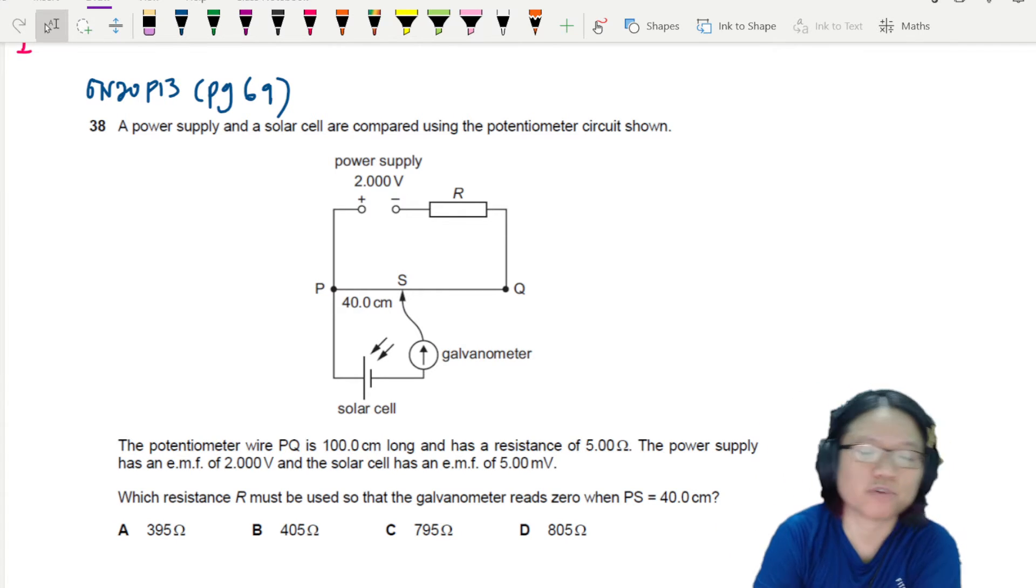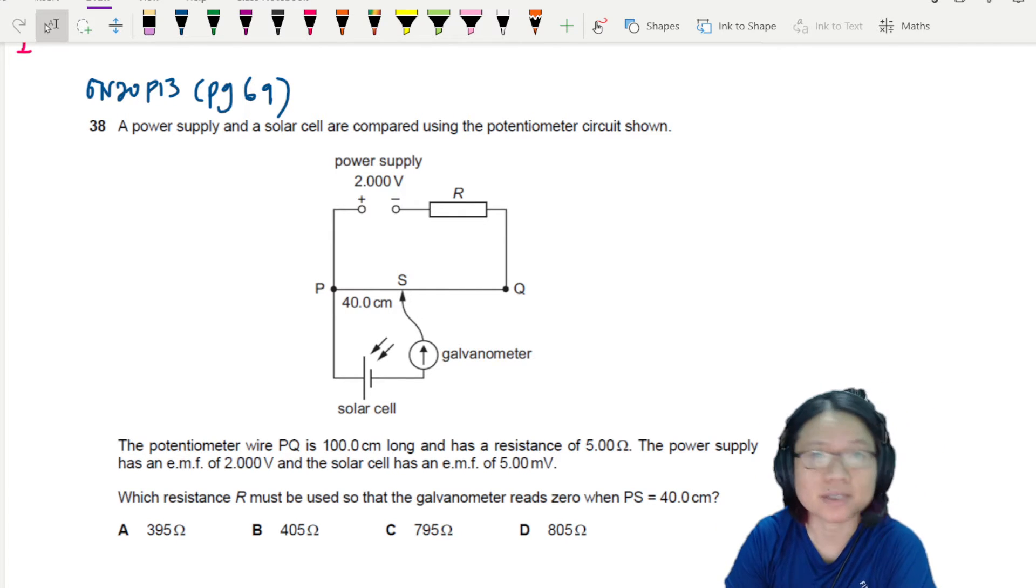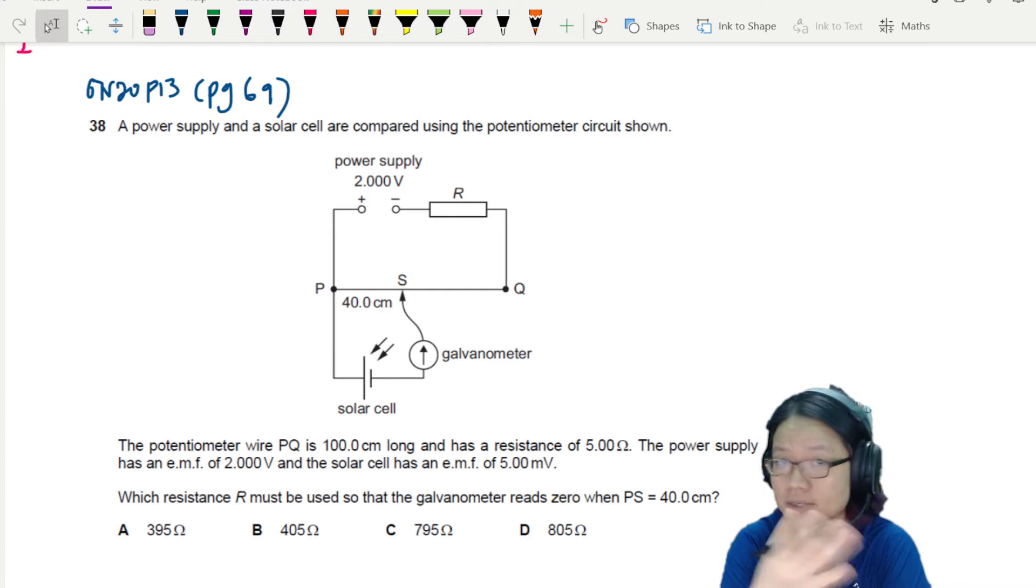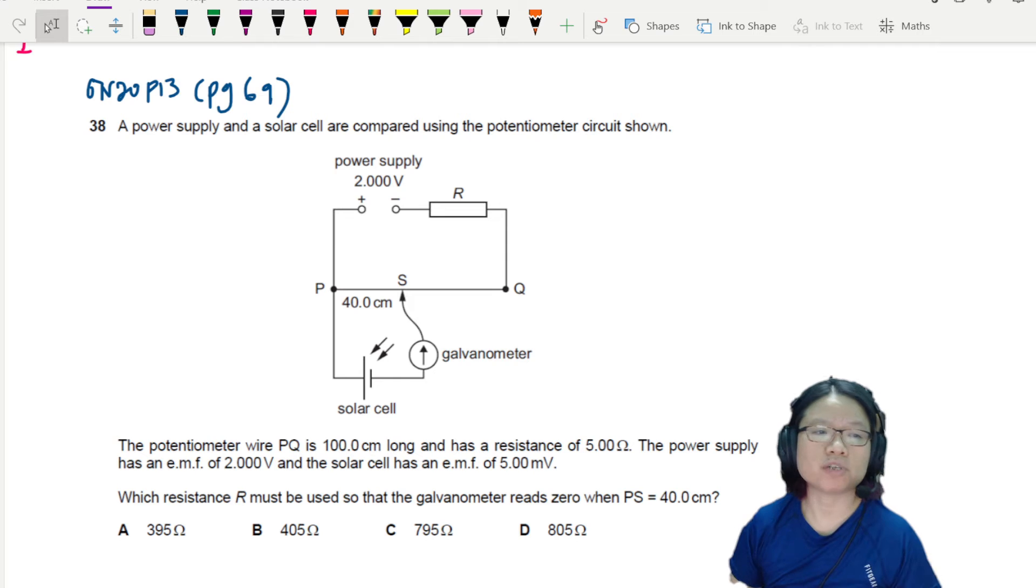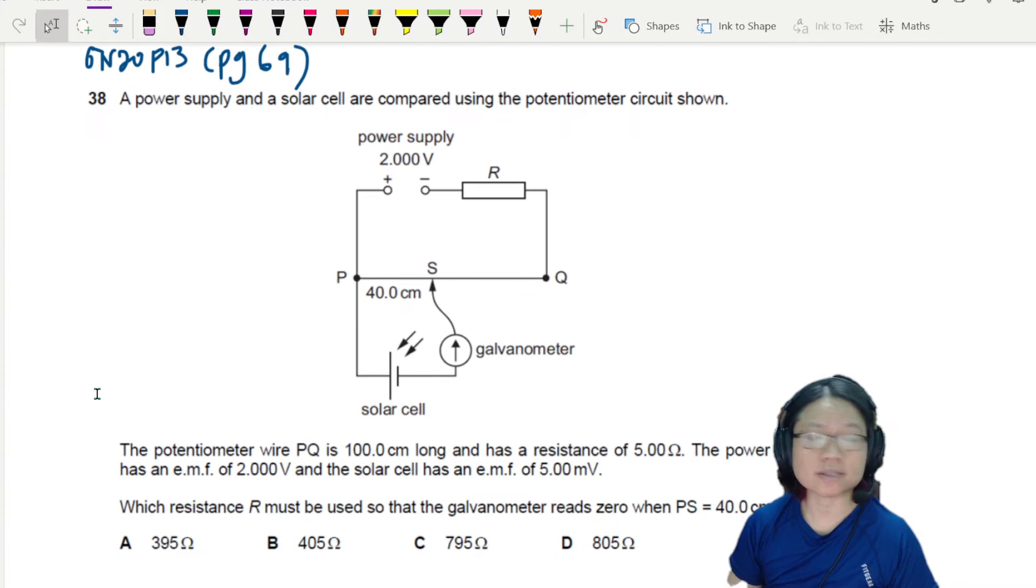One of the many benefits of using a potentiometer circuit is that we can adjust the sensitivity so that it gives us better precision, meaning we can use a potentiometer to adjust the sensitivity of the device. Let's look at this example.